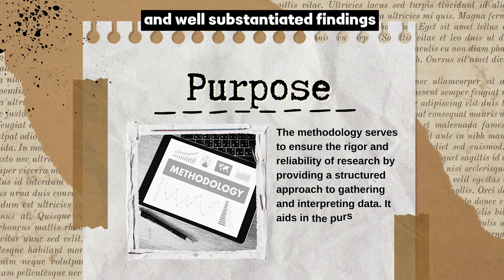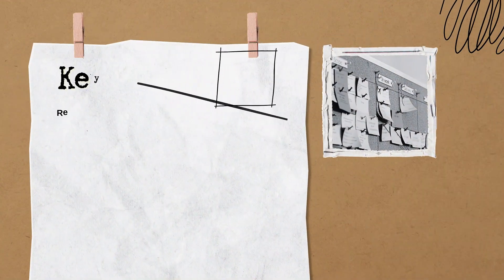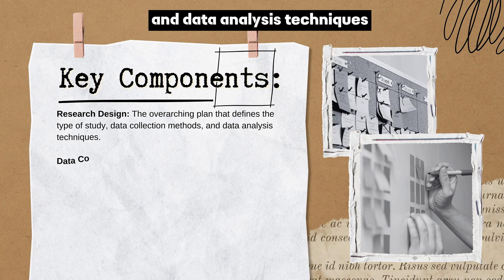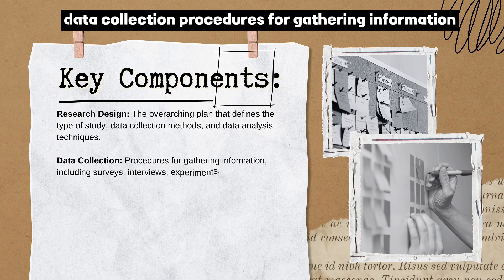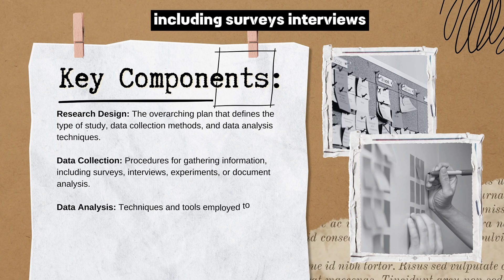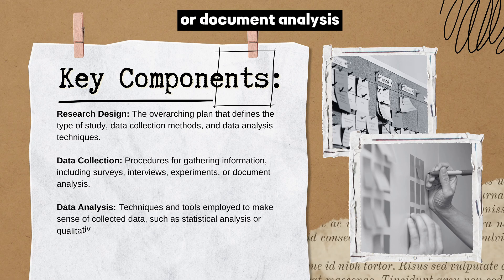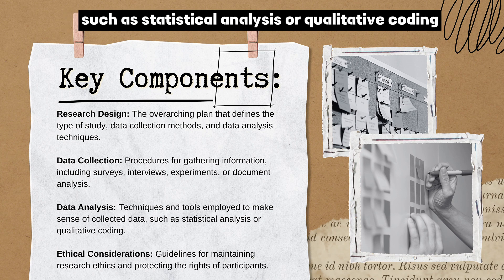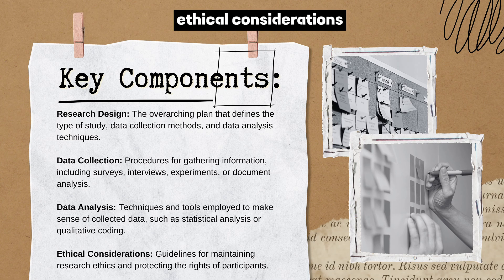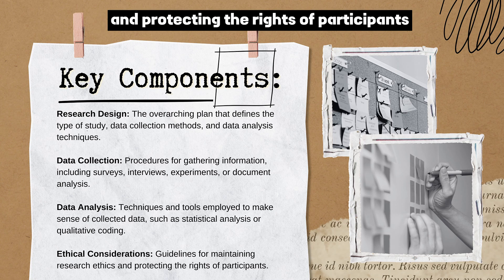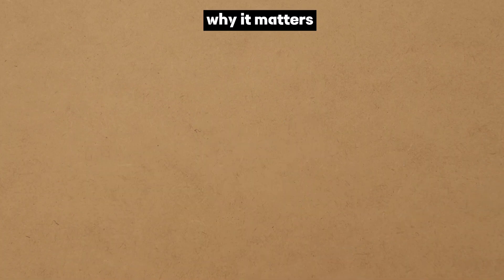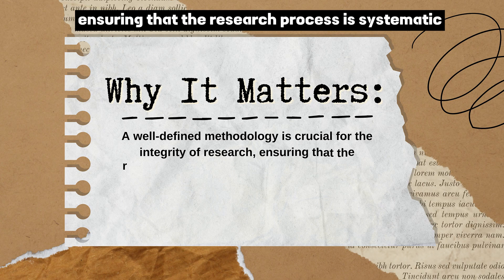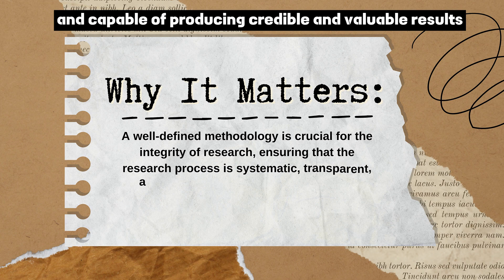Key components include: Research Design — the overarching plan that defines the type of study, data collection methods, and data analysis techniques; Data Collection — procedures for gathering information including surveys, interviews, experiments, or document analysis; Data Analysis — techniques and tools employed to make sense of collected data, such as statistical analysis or qualitative coding; and Ethical Considerations — guidelines for maintaining research ethics and protecting the rights of participants. A well-defined methodology is crucial for the integrity of research.